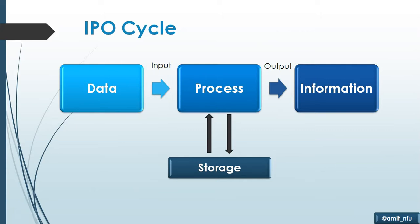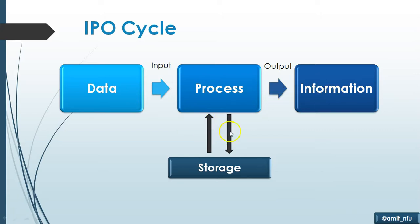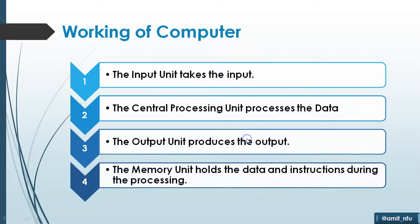Now, if we look at the IPO cycle of the computer — that is Input, Process, and Output — the data is fed into the input through input devices and it comes out of the output devices in the form of information. In between, if it is required to be stored temporarily or permanently, it is stored in the storage devices. Input units like keyboard, mouse, etc. take the input.